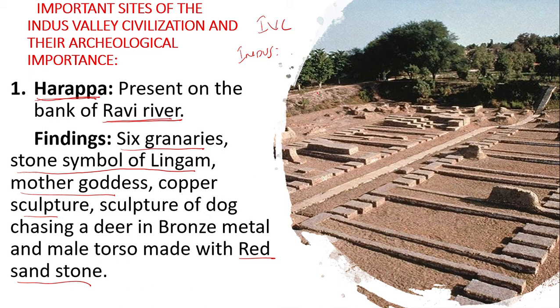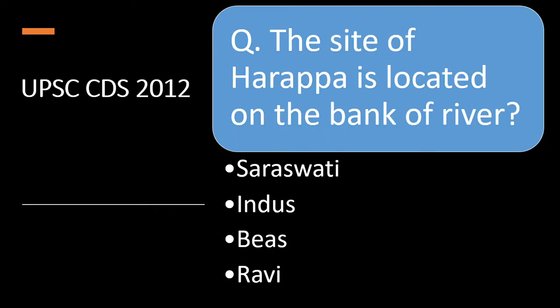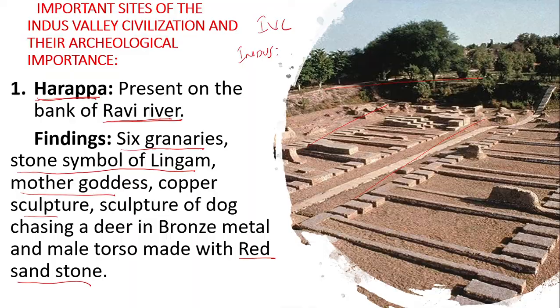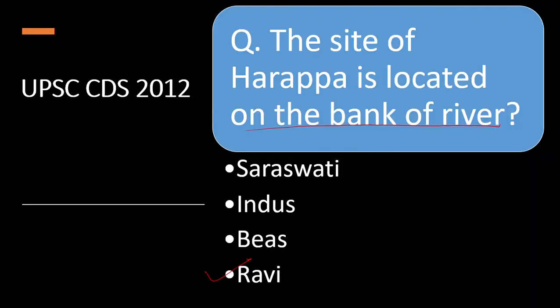You can see the Harappa city and its six granaries in the image. There was a previous year question in UPSC CDS 2012 asking on which river bank Harappa is located. The answer is Ravi — not Saraswati, not Indus, not Beas. Option number four: Ravi. A very simple question once you know the site.